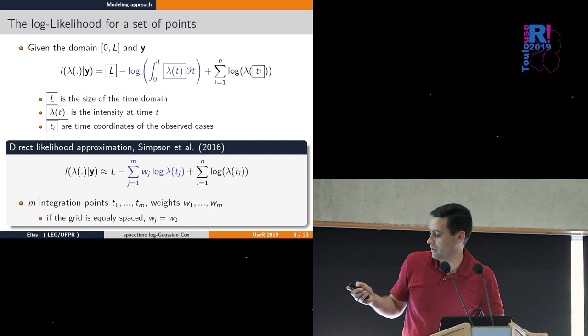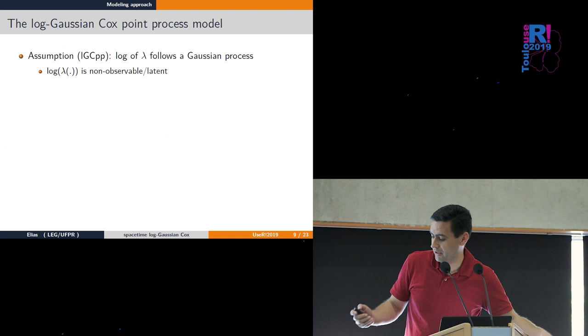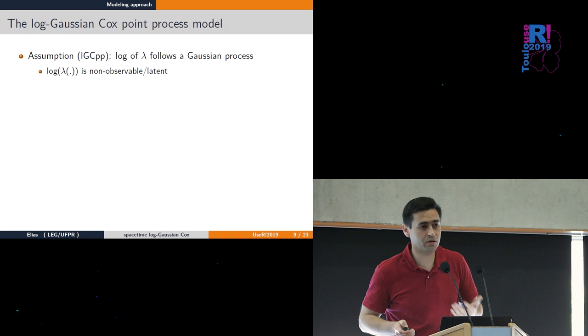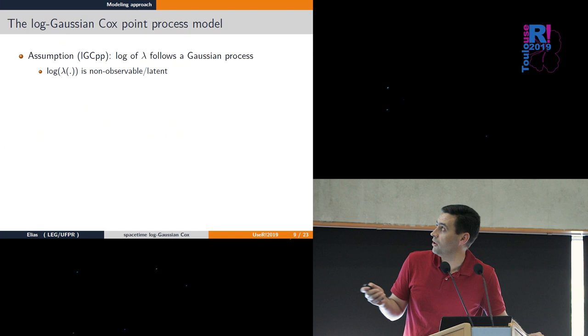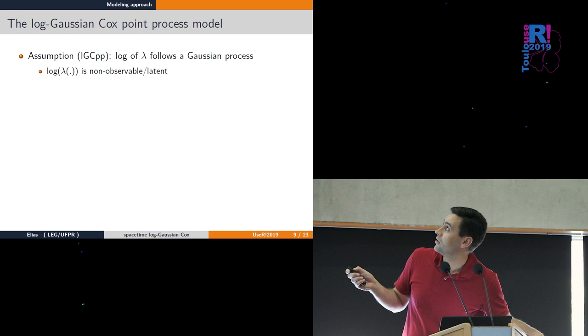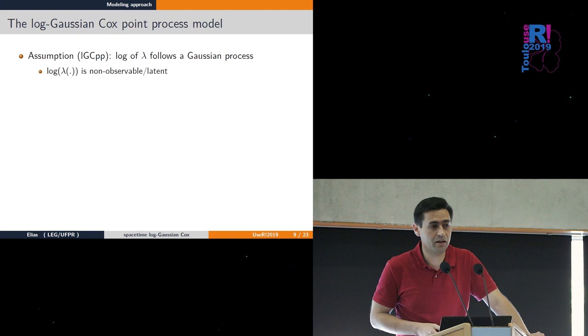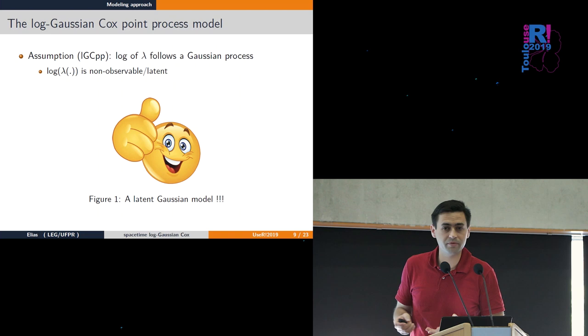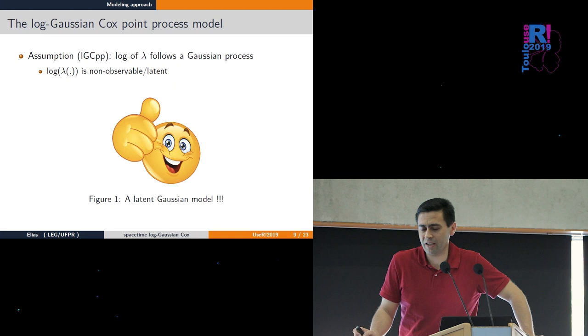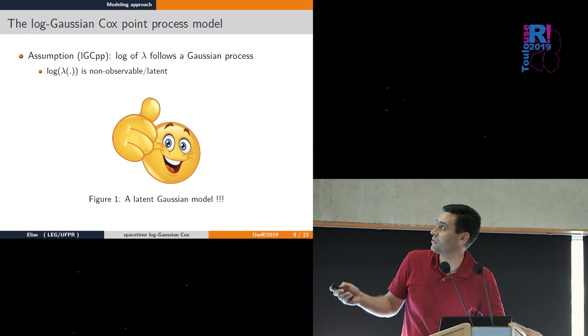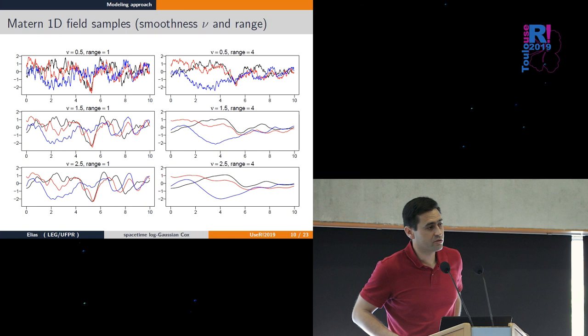The key point is we can assume the log of the intensity function follows a Gaussian process. Now it's non-observable and latent, so we have a latent Gaussian model. This is good because there are ways of doing fast computations for these problems.